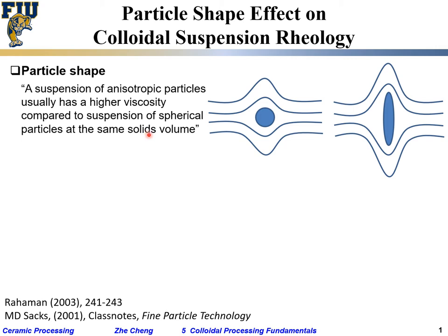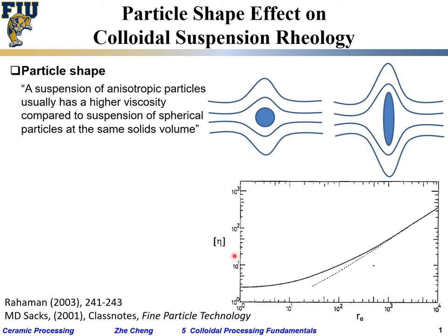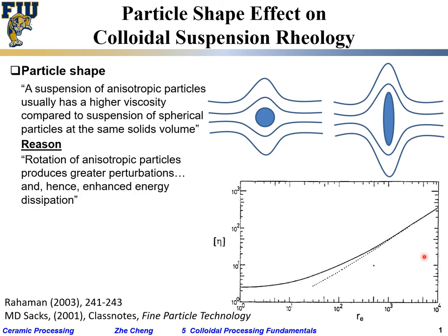At the same solid loading, these anisotropic particles would be way more viscous. This is experimental or model data: viscosity versus aspect ratio. Ten to the power of zero means spherical — a one-to-one aspect ratio. When we get to higher and higher aspect ratio, the viscosity even at the same solid loading changes by several orders of magnitude dramatically.